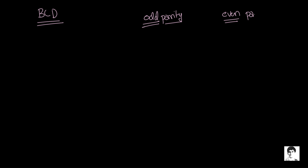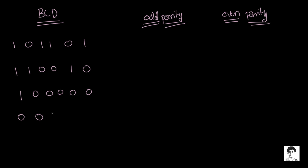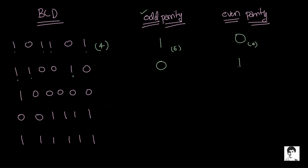Now let me write down a couple of binary words and see what parity bit we need to add for odd parity and even parity. For the first word, we have four ones — the number is already even — so the odd parity bit would be 1 (making five ones total) and the even parity bit would be 0. In the second word we have three ones, so the odd parity bit would be 0 and the even parity bit would be 1. Similarly for the third word: odd is 0 and even is 1. The next word has four ones, so odd is 1 and even is 0. Another word has six ones which is even, so odd is 1 and even is 0.